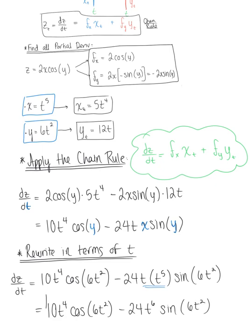And so this will be our beautiful final answer. You could also simplify by factoring out a greatest common factor of 2t to the fourth, but this form is perfectly acceptable.